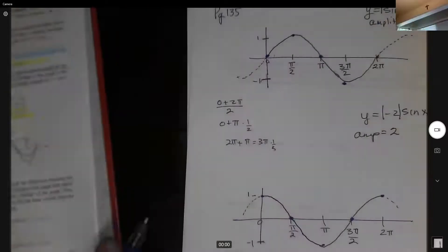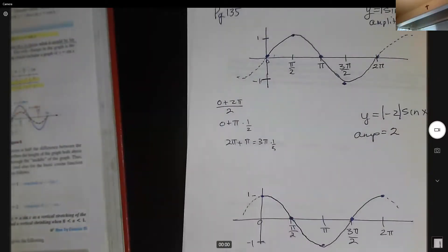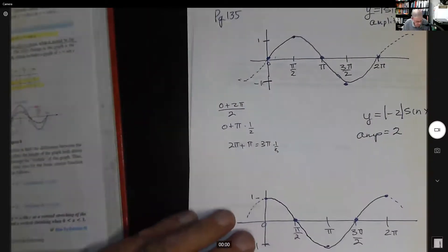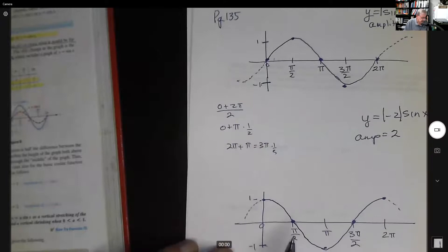Here's your sine function — notice how it keeps repeating in both the positive and negative direction. Here's your cosine function — if you rotate it a bit it becomes a sine function. We talked a little about amplitude, so let's try Example 1 on page 137.